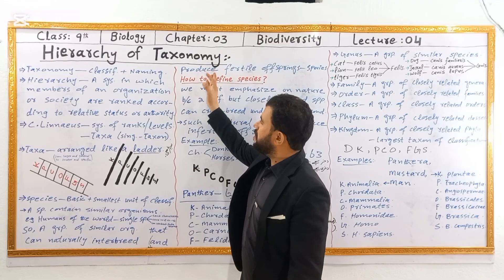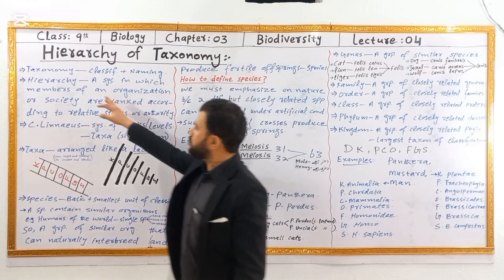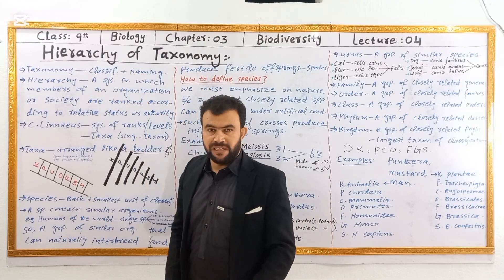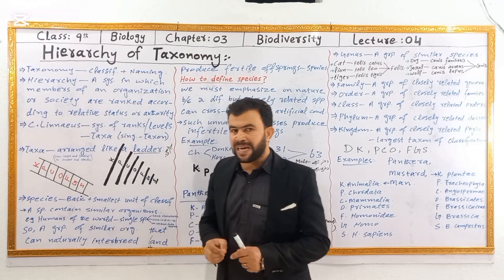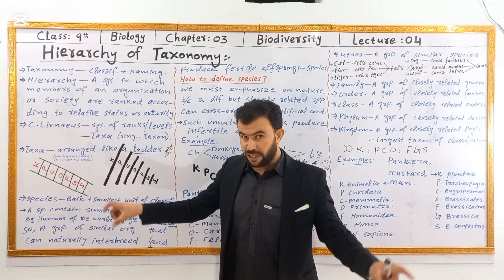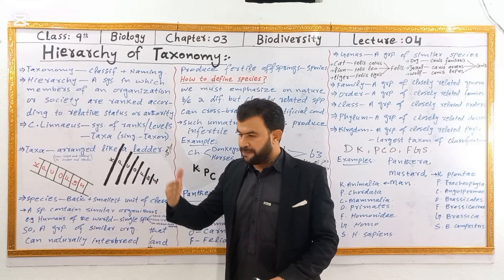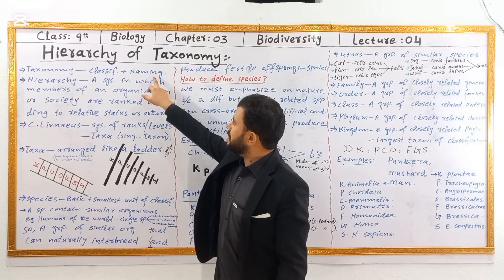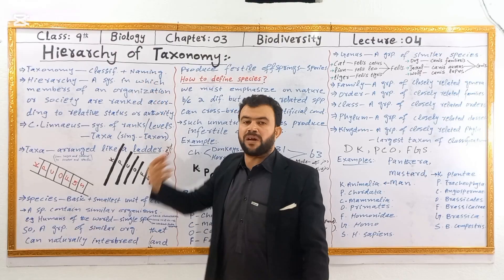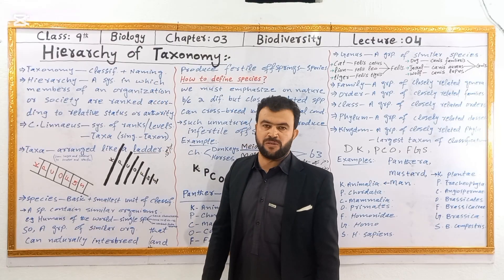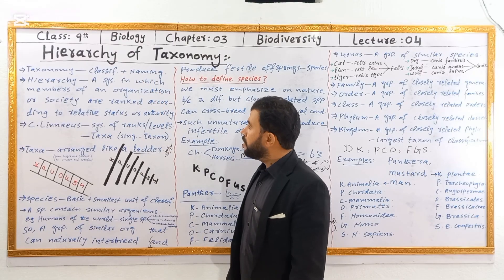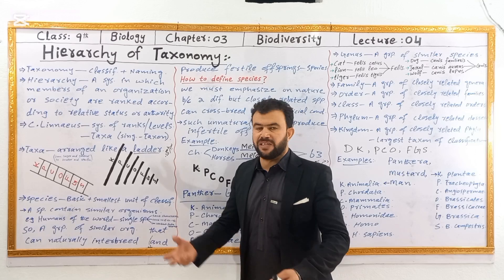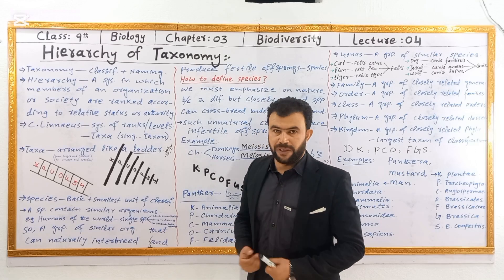What does taxonomy mean? Taxonomy is classification and naming. It is a branch of science concerned with the classification of organisms into groups or subgroups, and giving them scientific names. This is called taxonomy. Hierarchy means group, rank, or group.